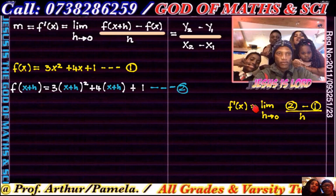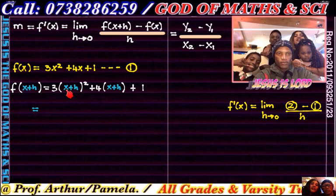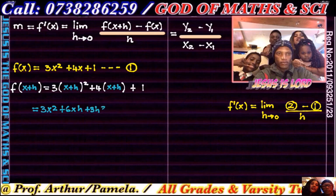Before calling it equation two, simplify by expanding. Squaring the binomial (x+h): x squared becomes 3x², the middle term 2xh times three gives 6xh, and h squared times three gives 3h². Then multiplying the four through the bracket gives 4x + 4h, plus one. This is equation two.